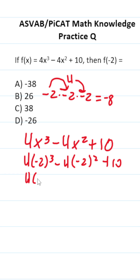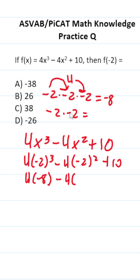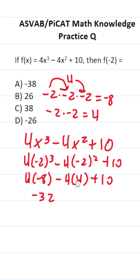So this is 4 times negative 8, minus 4 times negative 2 squared. Negative 2 squared is negative 2 times negative 2 — a negative times a negative is positive, so that's positive 4. This gives us: 4 times negative 8 is negative 32, and negative 4 times positive 4 is negative 16, plus 10.